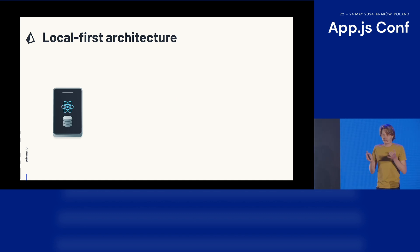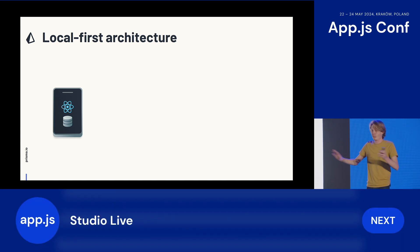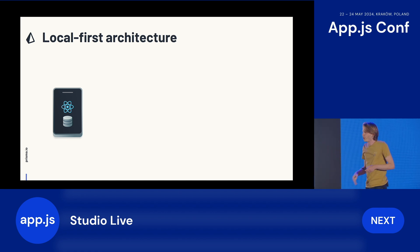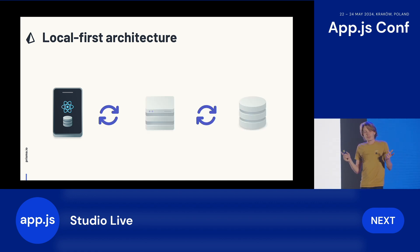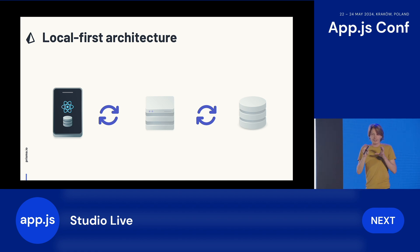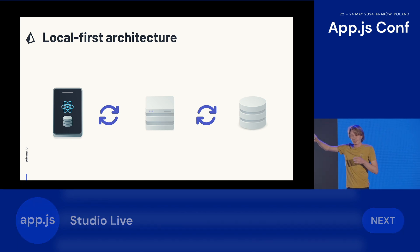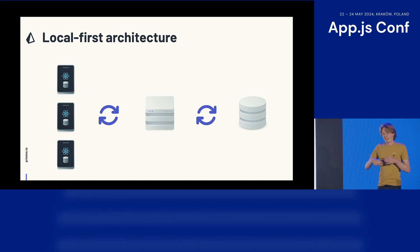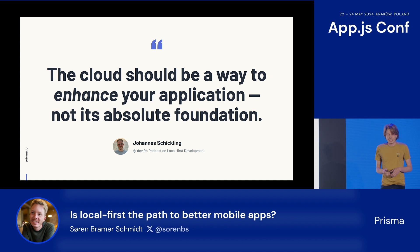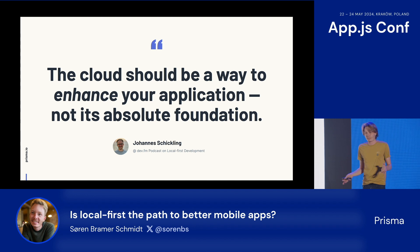The proposition of Local First is that we do away with that dichotomy. We take the best of both worlds — we move the data into the application, it's local on device, and then we introduce a sync system that makes sure the data on your local device is synchronized up to the sync system and to a centralized database. That way you can have multiple devices, sync between them, collaborate with other users, and you have backup. A saying in the local first movement is that the cloud should be a way to enhance your application, not its absolute foundation.